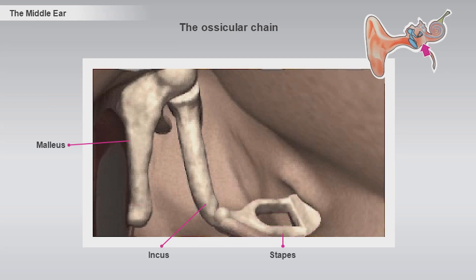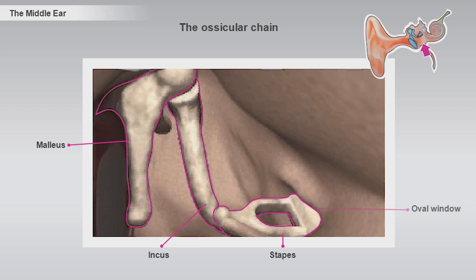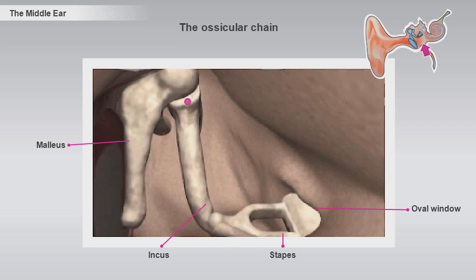The malleus consists of a long process which is attached to the eardrum. The head of the malleus attaches to the body of the incus. The long process of the incus attaches to the stapes, which has a small footplate implanted in the oval window in the inner ear. This way, the vibrations of the eardrum are transmitted via the ossicular chain to the inner ear.